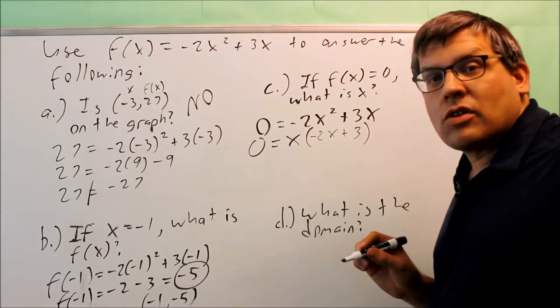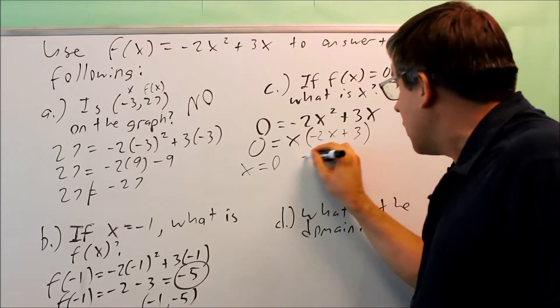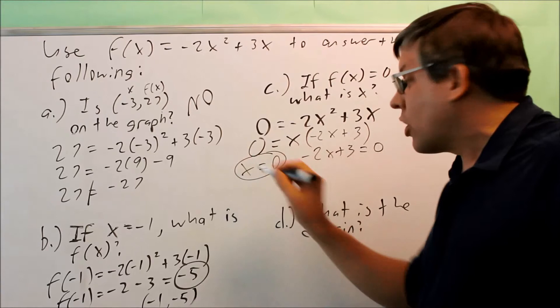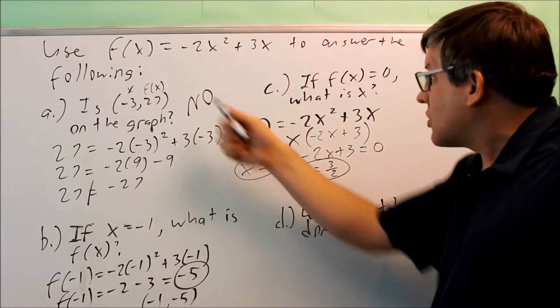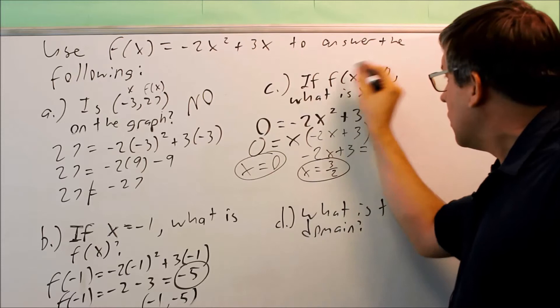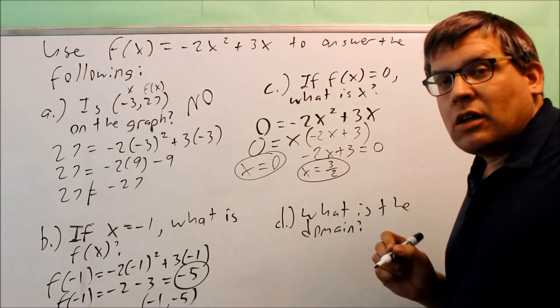Once you have it factored, the way to solve this is you take each one individually and set it equal to 0. I have x = 0, and I have -2x + 3 = 0. This one is already solved. So that's one of my answers, x is 0. If you solve this, you're going to get x = 3/2, and that would be the second answer. So if x is 0 and x is 3/2 inside here, that means that the whole thing will end up equaling 0, and that's originally what it's asking us to solve for.